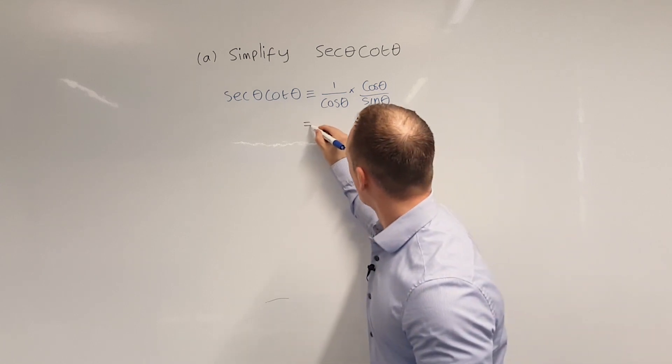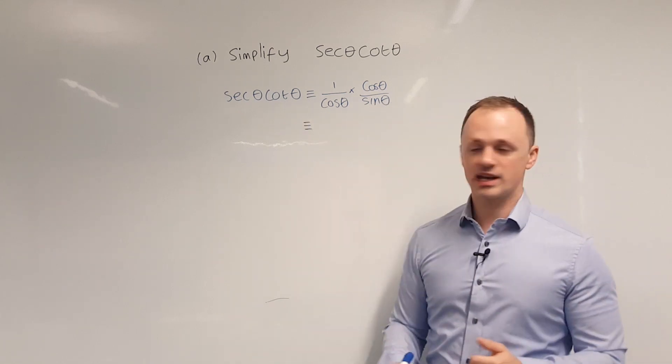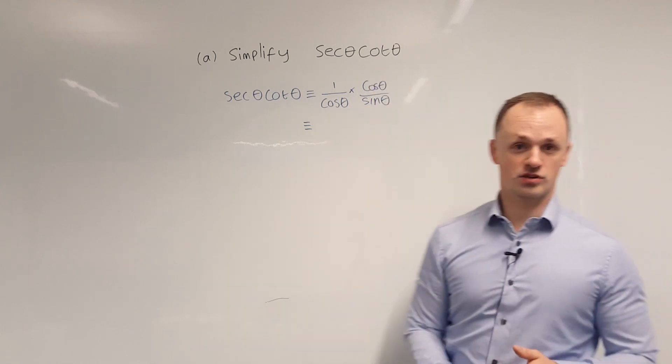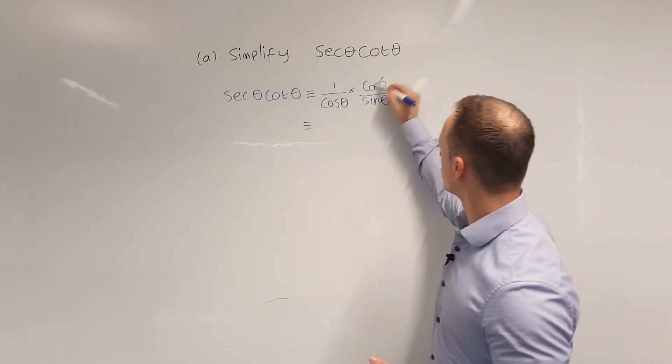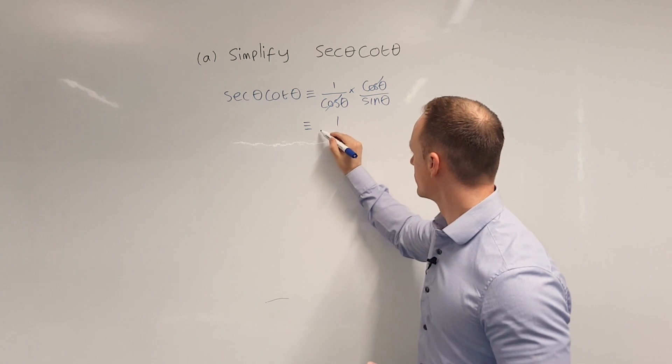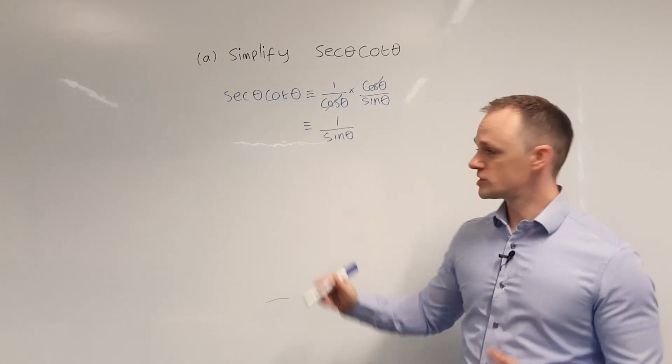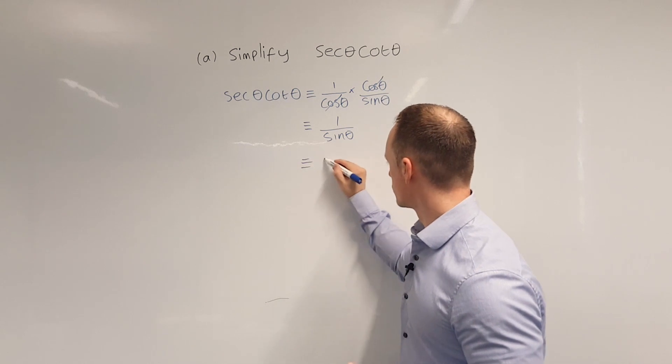By doing this we can spot anywhere where things might cancel. So in this case we've got cos theta on the top of a fraction and cos theta on the bottom so we can cancel the cos thetas and we get left with 1 over sin theta and 1 over sin theta we can write that as cosec theta.